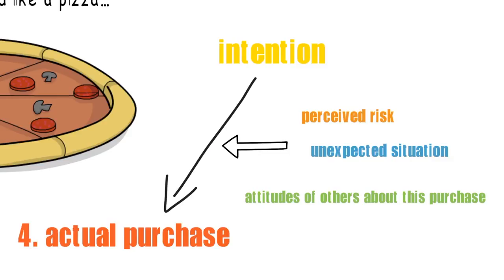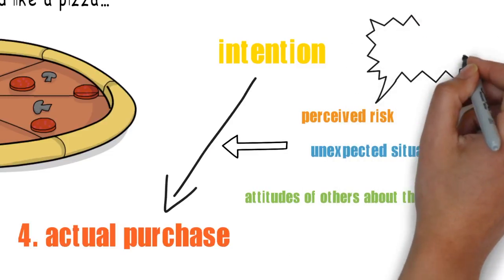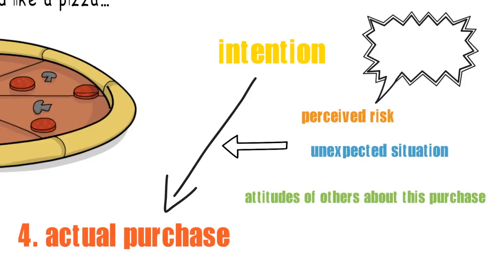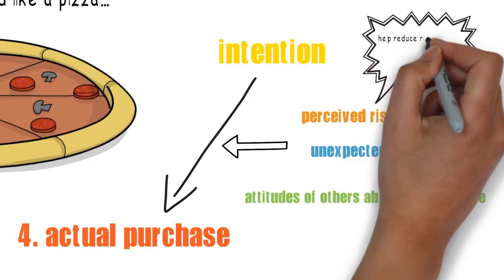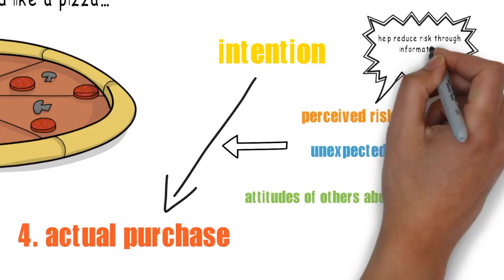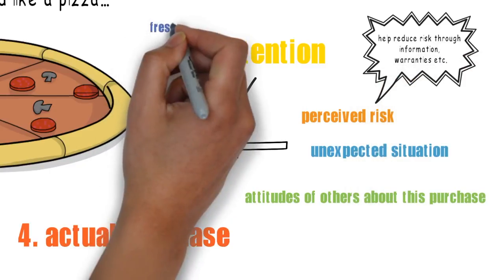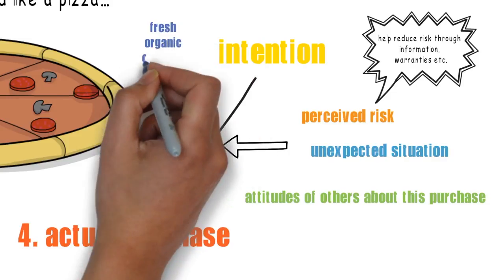Usually the consumer will take certain actions to reduce this risk, for example by researching heavily before the purchase or looking for well-known brands and warranties. To this end, marketing can aid the consumer by providing information and support to reduce this risk. In our story the restaurant brochure could provide explicit information, for example about the ingredients.